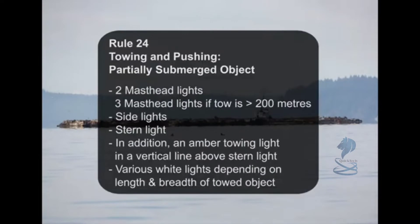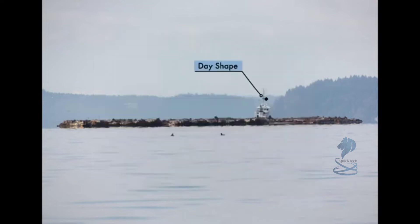Rule 24, Towing and Pushing, Partly Submerged Object: two masthead lights — three masthead lights if tow is greater than 200 meters — side lights, stern light. In addition, an amber towing light in a vertical line above the stern light. Various white lights depending on the length and breadth of the towed object. Day shape: if the tow is greater than 100 meters, a diamond shape near the aftermost extremity of the last object being towed. If tow is greater than 200 meters, an additional diamond shape as far forward as practicable.